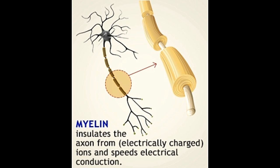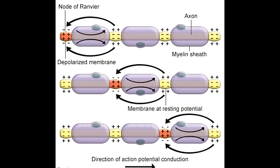Let's discuss the role of myelin sheath in detail with a neatly labeled diagram. The myelin sheath is responsible for performing two crucial functions: first, speeding up electric conduction of the neuron, and second, insulating the axon from electrically charged atoms and molecules.